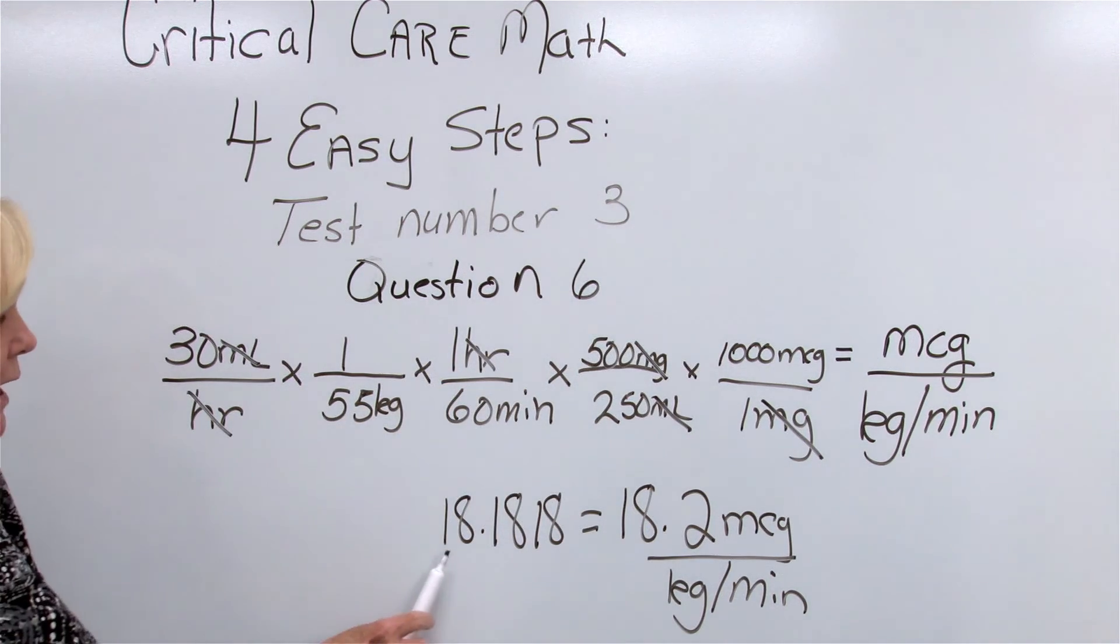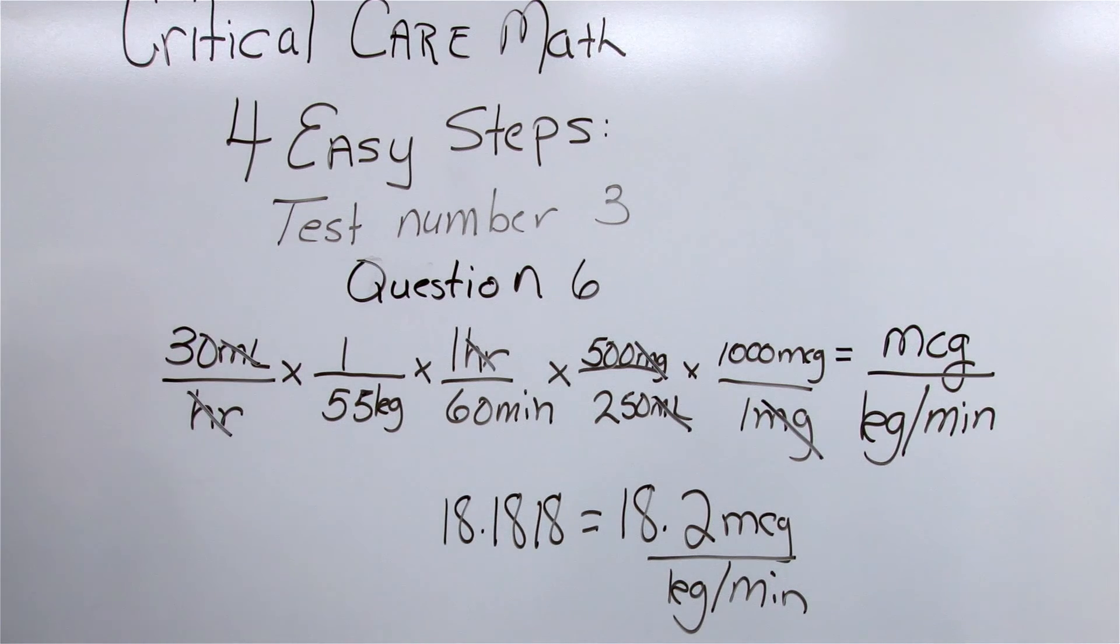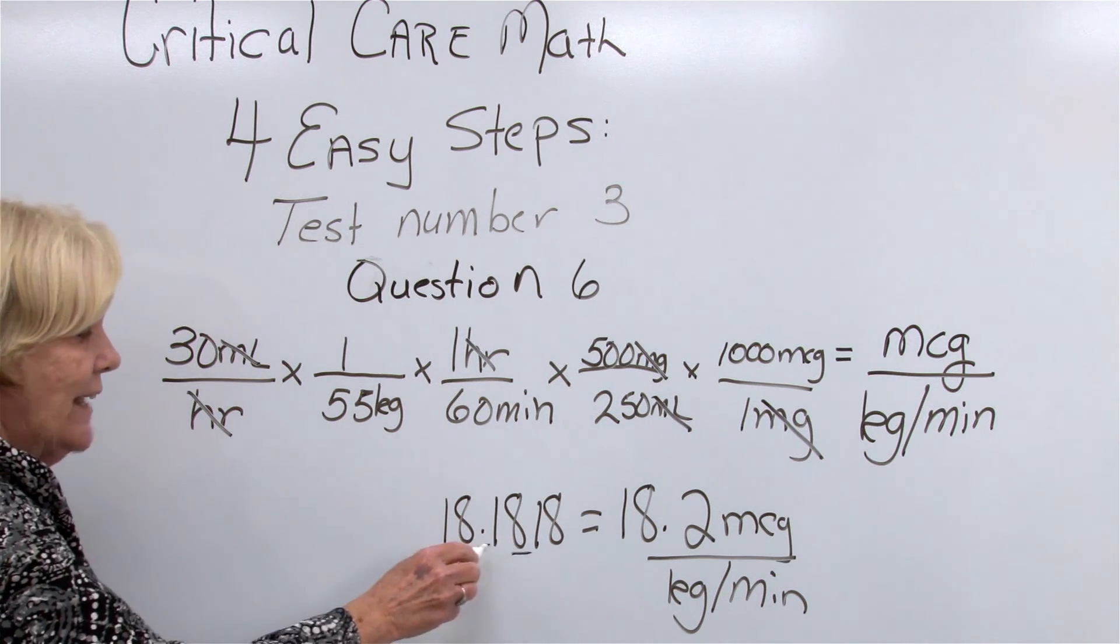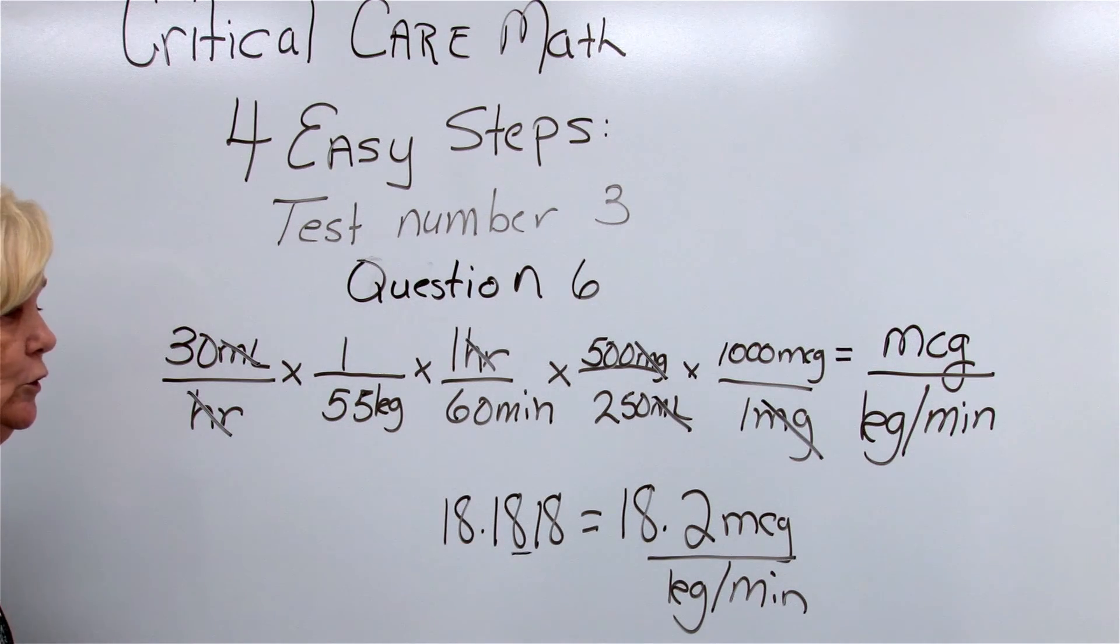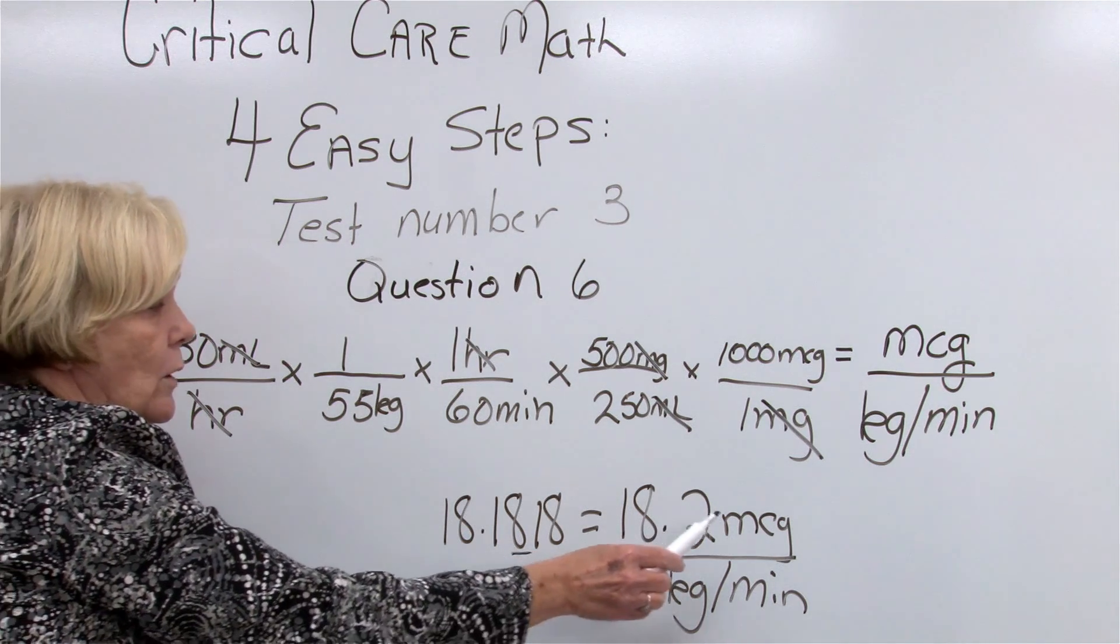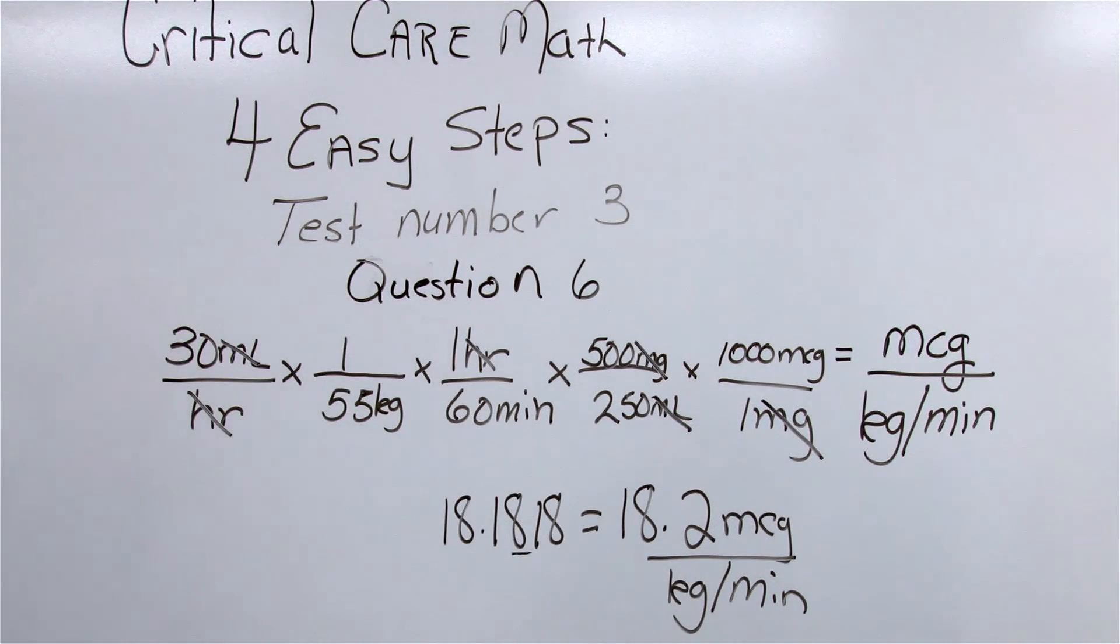When I do the arithmetic in my calculator, I get 18.1818. Do you remember that this question asked me to round to one decimal place? So I always go next door and look, and this 8 is going to change that one to a 2. So my answer is 18.2 micrograms per kilogram per minute. And there you go - you can now do all the critical care math you need to do.